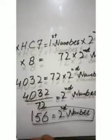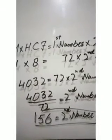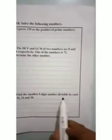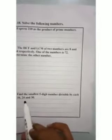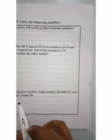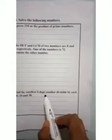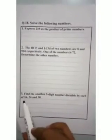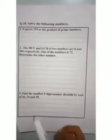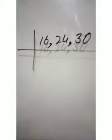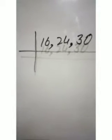Now we have the last part of this question: find the smallest five-digit number divisible by each of 16, 24, and 30. So we need to find a five-digit number — the smallest one — that is divisible by 16, 24, and 30. First of all, we will find the LCM of these numbers.